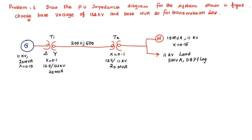A pleasant greeting to all. In this video, I am going to explain how to draw the per unit impedance diagram for the power system network. Problem 1: Draw the per unit impedance diagram for the system shown in the figure. Choose a base voltage of 132 kV and base MVA of 20 for the transmission line.